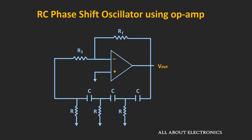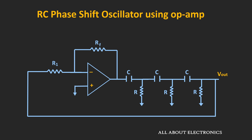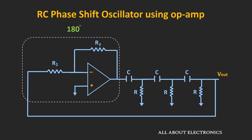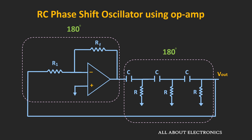Here is the RC phase shift oscillator circuit designed using an op-amp, and the same circuit can be redrawn as shown. The op-amp is configured in the inverting mode, providing a 180 degree phase shift, while the RC stages in the feedback circuit provide a further 180 degrees. The overall phase shift introduced is therefore 360 degrees, or equivalently zero degrees.